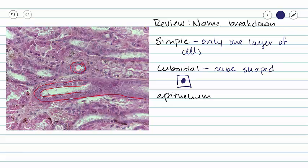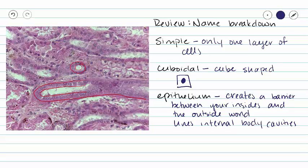So cuboidal just means that your cells are cube-shaped. And finally, what does epithelium mean? It means that you are lining your internal surfaces of your body and protecting yourself from the outside world. In the case of our kidney here, our internal body cavity is that nephron that we've been talking about.